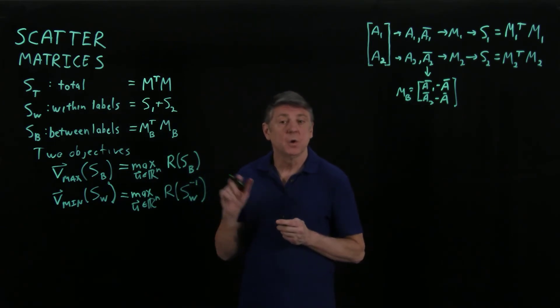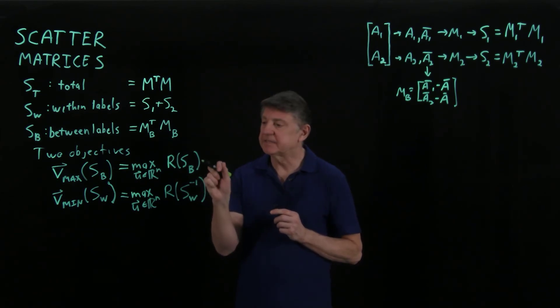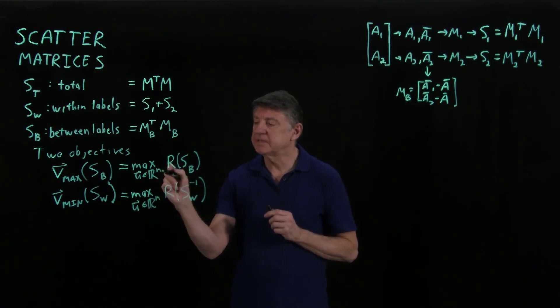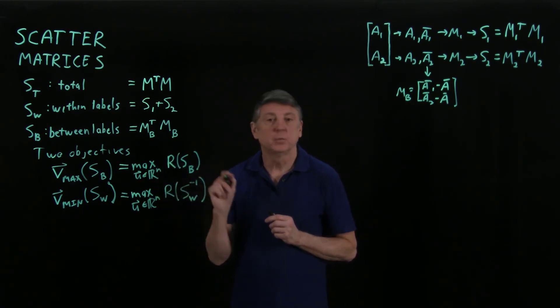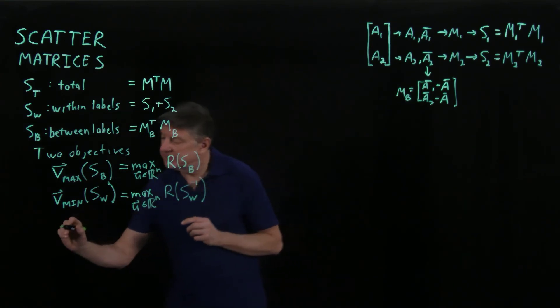And so what Ronald Fisher's linear discriminant is, is it simultaneously solves these problems. And the way that we can do this is that if we're maximizing this and maximizing that, then we're maximizing the product.